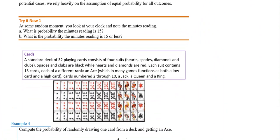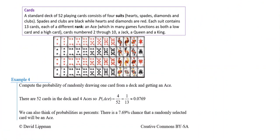Cards are very commonly used in probability problems, so make sure you understand how a deck works. In a deck of cards you've got four suits: diamonds, clubs, hearts, and spades. Each suit goes from two to ten, then jack, queen, king, and ace. There are 52 cards in the deck total. Each suit has 52 divided by 4 — that's 13 cards per suit.